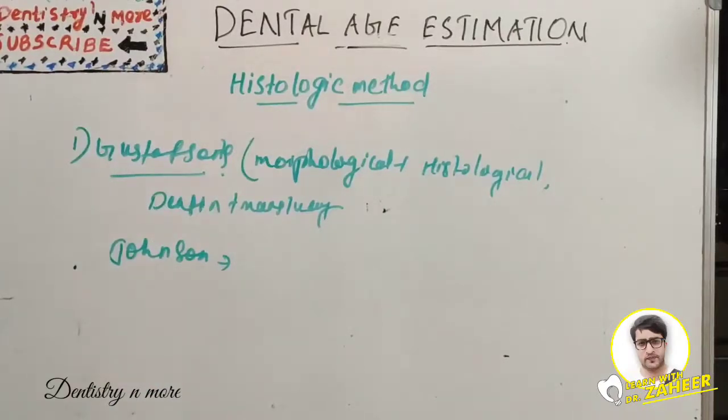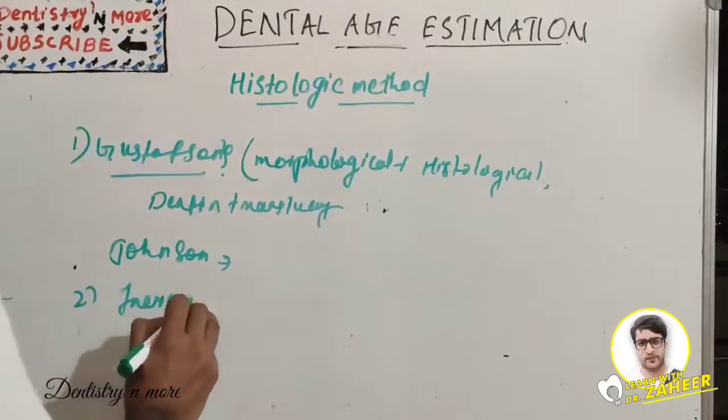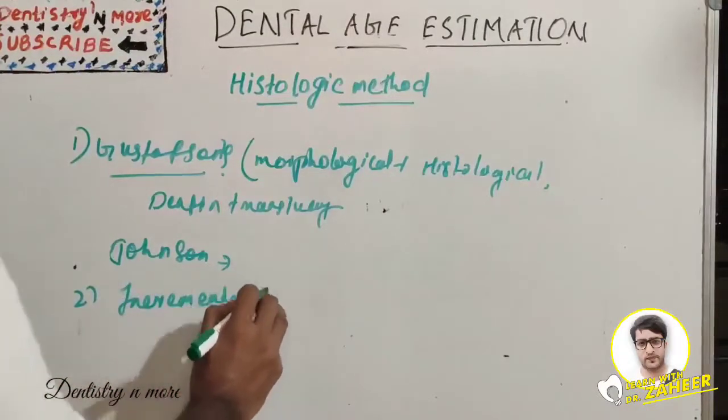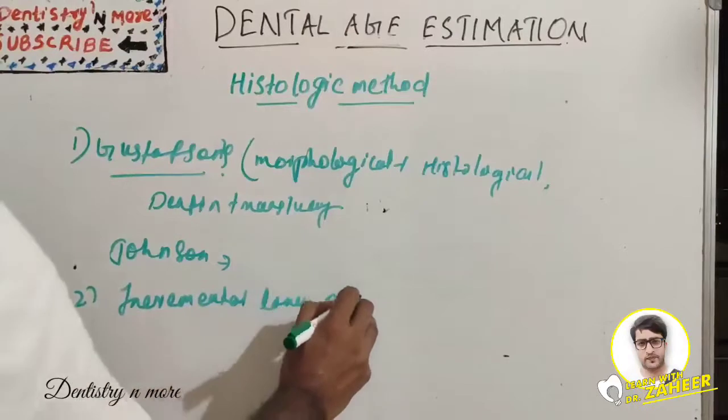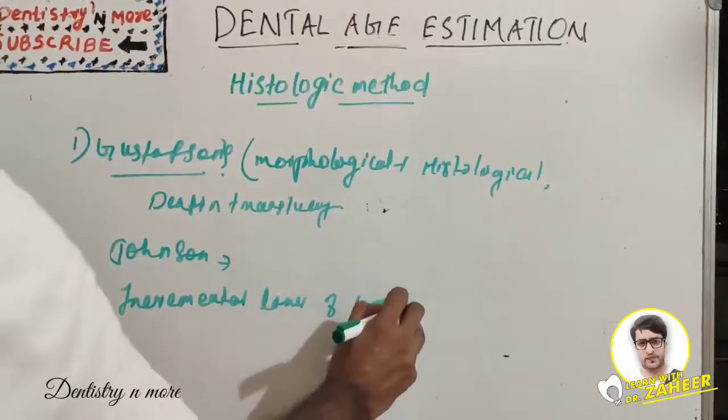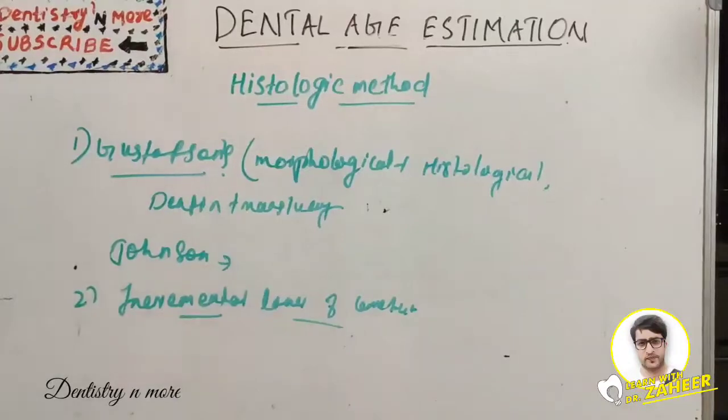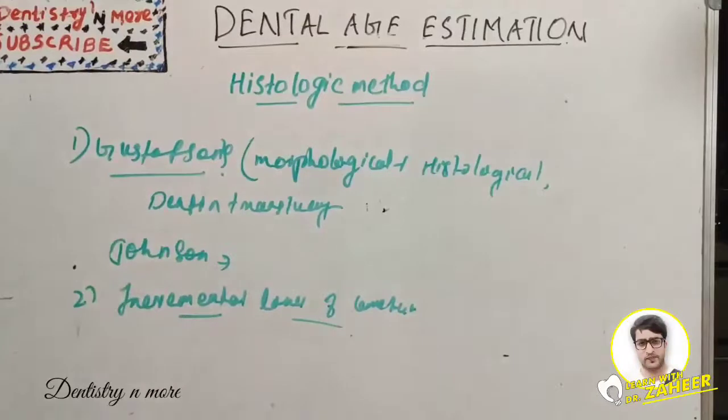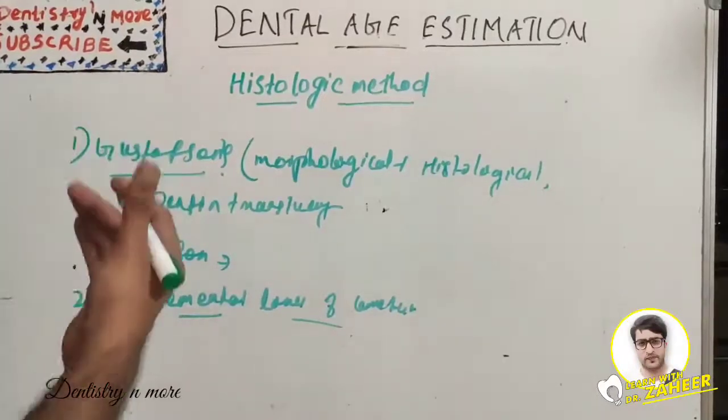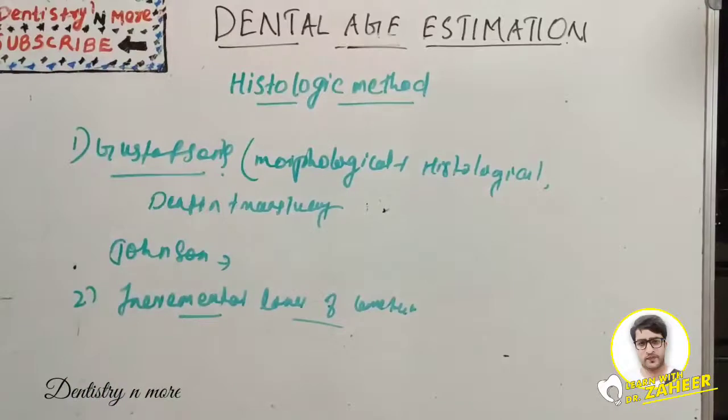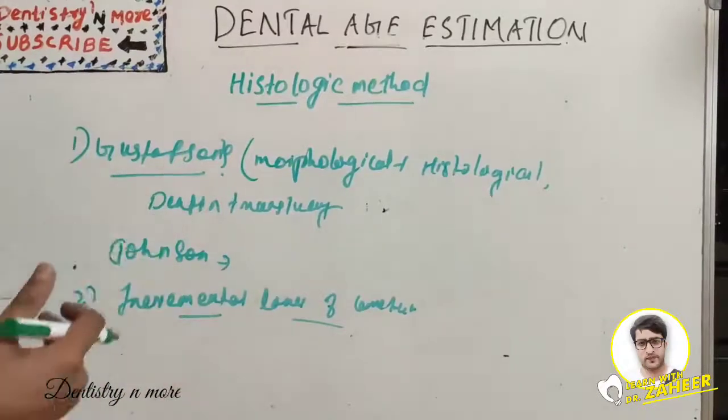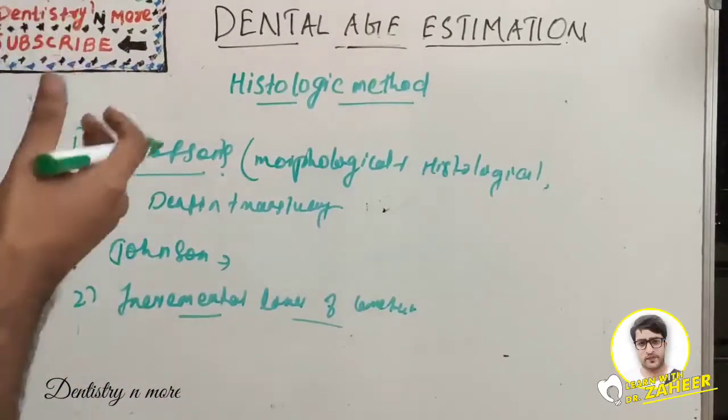Second thing is we can use incremental lines of cementum. Incremental lines of cementum is another tool for age estimation. Acellular cementum incremental lines are used for age estimation using mineralized unstained cross-sections of teeth.